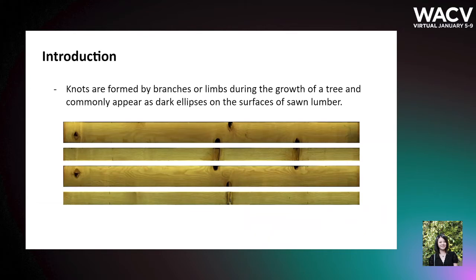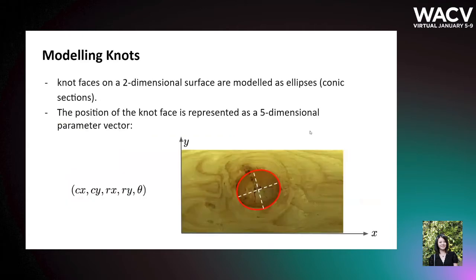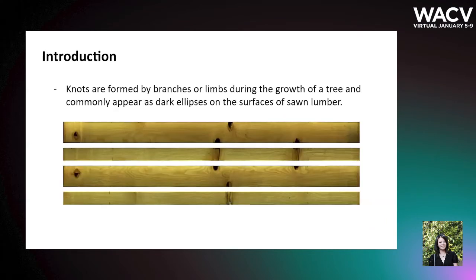As an introduction, we first introduce what are knots. Knots are formed by branches or limbs during the growth of a tree and commonly appear as dark ellipses on the surface of sawn lumber. They significantly affect both the aesthetic quality and mechanical properties of lumber. Knots have a very important role in determining the commercial value of lumber.